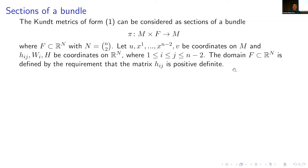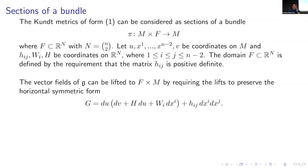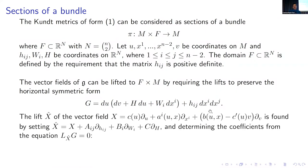The transformations on the base M can be lifted to the total space by requiring the lifts to preserve the horizontal symmetric form G. Instead of considering h, w_i, h_{ij} as functions, we consider them as coordinates on the fibers of the bundle. The lift X-hat of a vector field X is found by taking some combination of vectors in the fiber directions and then determining the coefficients by solving the corresponding equation.